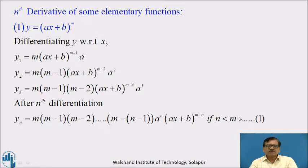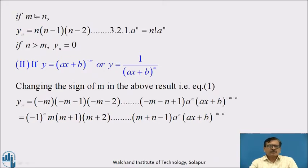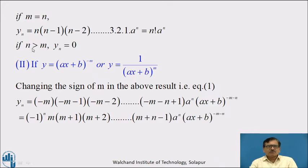Let us call this equation number 1. There are three cases. This formula applies when n < m. If m = n, then yₙ = n(n−1)(n−2)···3·2·1 · aⁿ = n! · aⁿ, obtained by substituting m = n in the above result. And if n > m, that is the order of the derivative is greater than m, then the nth derivative of (ax + b)^m will be zero, so yₙ = 0.